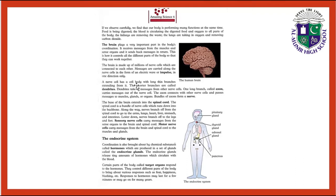A nerve cell has a cell body with long thin branches extended from it. The shorter branches are called dendrites. Dendrites take in messages from other nerve cells. One long branch called the axon carries messages out of the nerve cell.